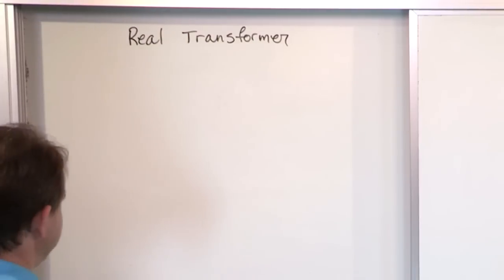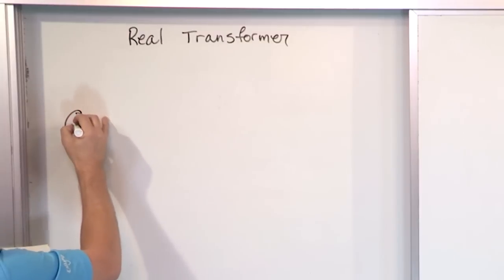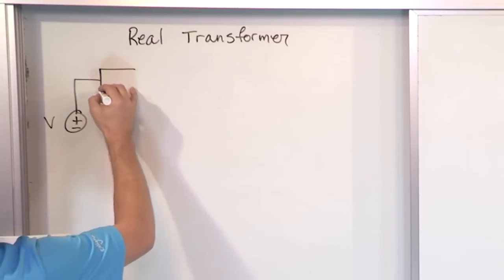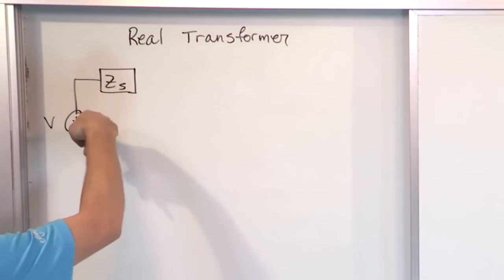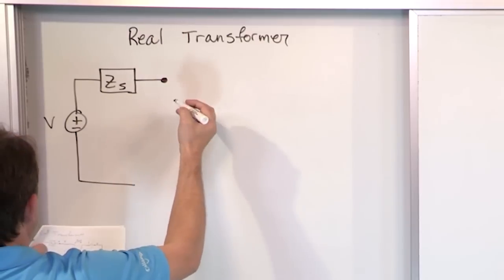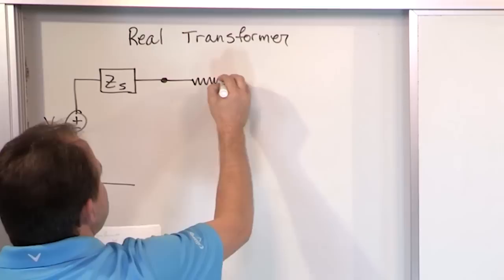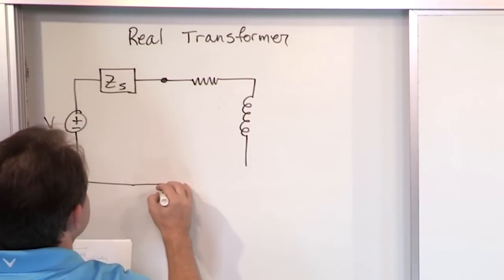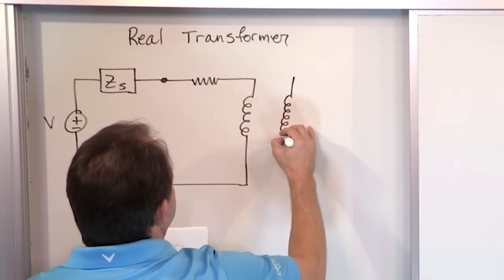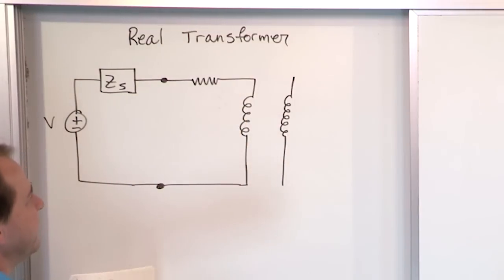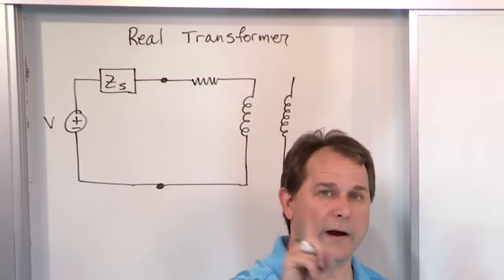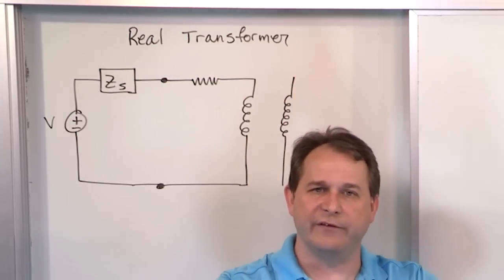On the left-hand side we'll have some voltage source V — a sinusoidal source. Then we have some source impedance ZS, representing the inductance, capacitance, and resistance associated with the source. Then we'll have a dot, a resistance, and then a coil of wire. We'll tie it with another dot and loop it back. Physically close to it but not touching it, we will have another coil of wire. In the real world it does matter if you wind the coil one way or the other — the direction of the turns affects how the voltages and polarities work.